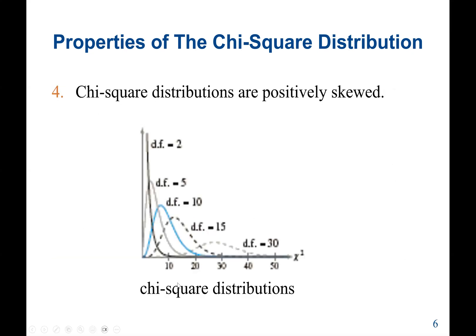These chi-square distributions are always positively skewed — all graphs are skewed to the right. The degrees of freedom change the shape of the graph, whether it shrinks or spreads. For example, with degrees of freedom equal to 2, the curve is narrow. When degrees of freedom is larger, say 30, the curve spreads wide. But all chi-square distributions are always positively skewed.